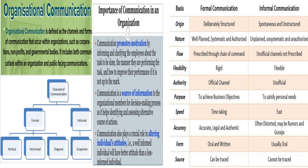Organizational communication is defined as the channels and forms of communication that occur within the organization. There are two types: formal and informal. Formal communication is vertical, horizontal, and diagonal. Vertical communication means top management providing information to lower management. It includes downward communication — from top management to lower levels — and upward communication, where lower-level employees provide feedback or information required by top management. Upward communication is much less common compared to downward communication.